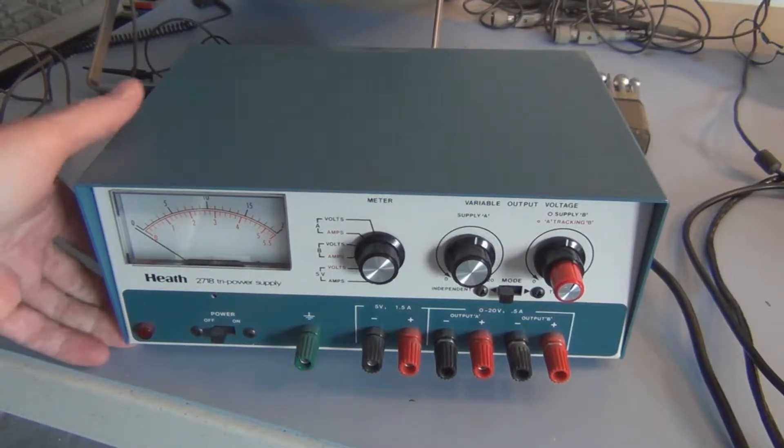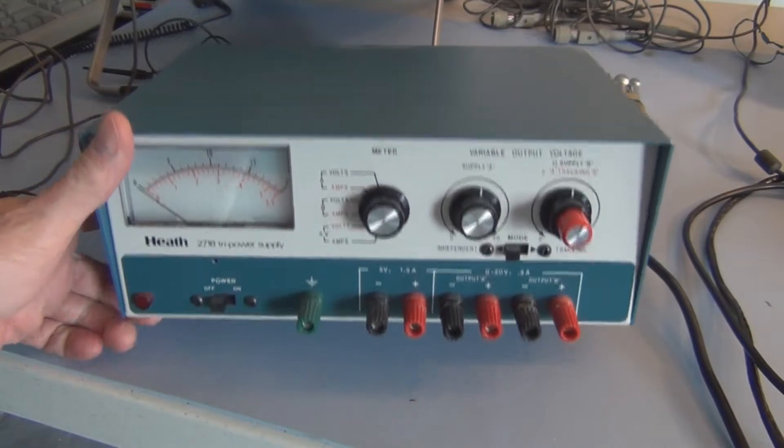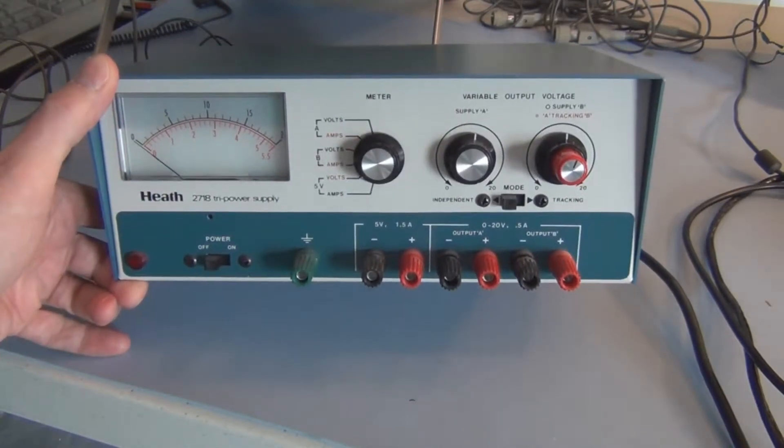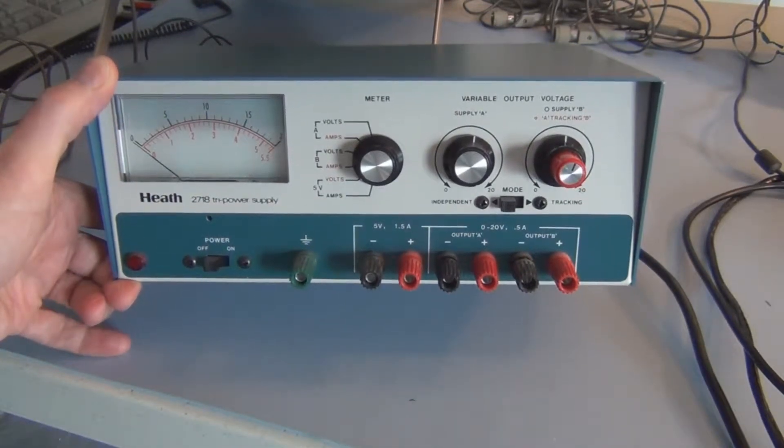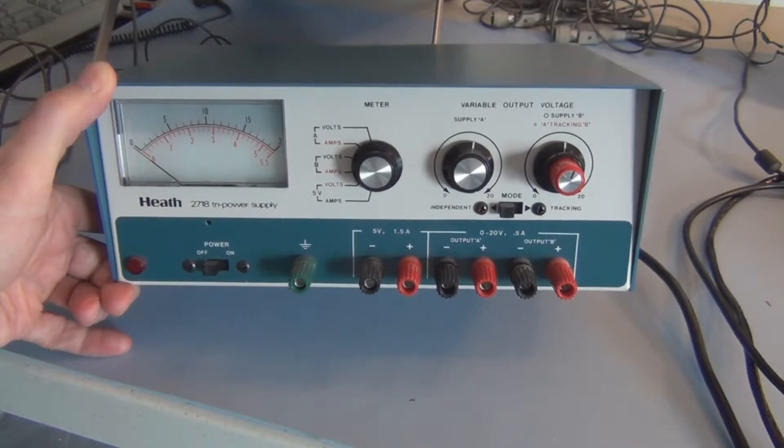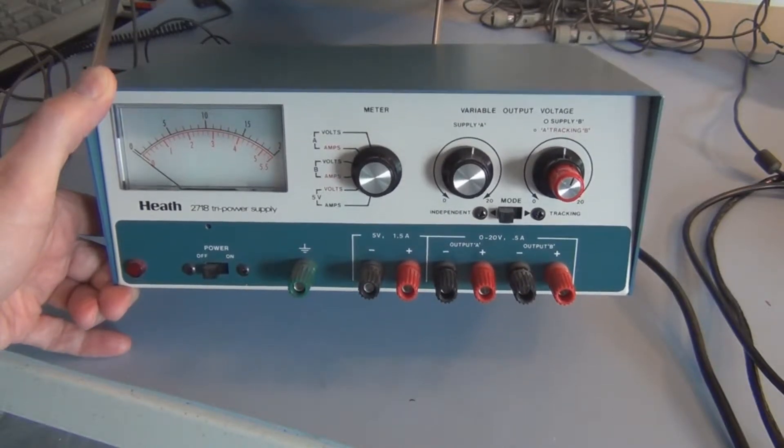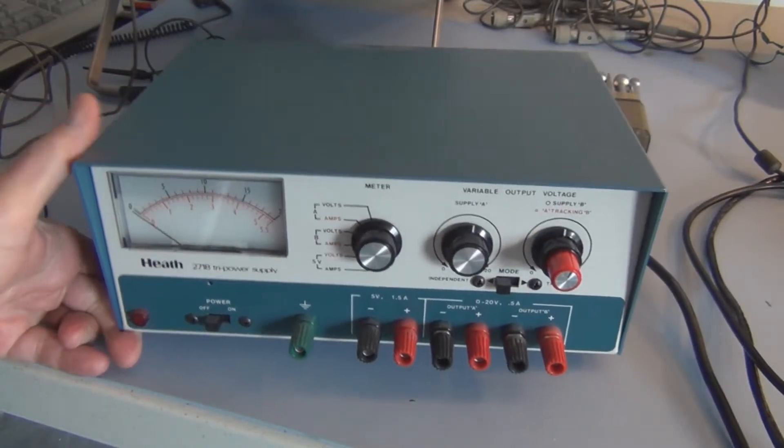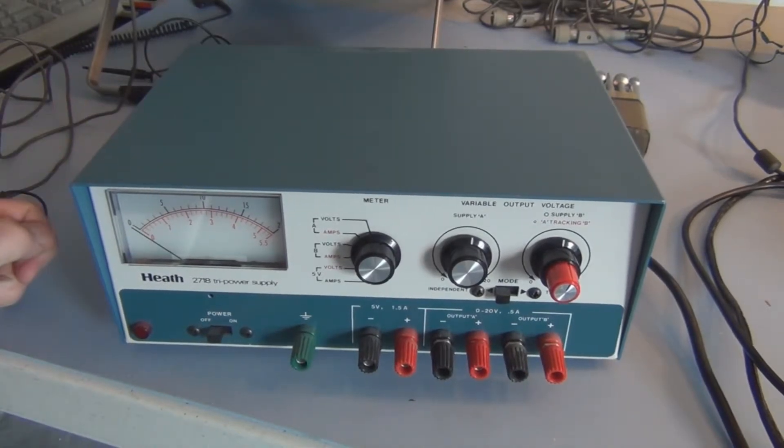Hi, welcome to my channel. This is a Heathkit 2718 triple output power supply. I built this as a kit a long time ago, I'm thinking maybe 1982, and it's been in storage for a long time. I wonder if the caps are all dried out.